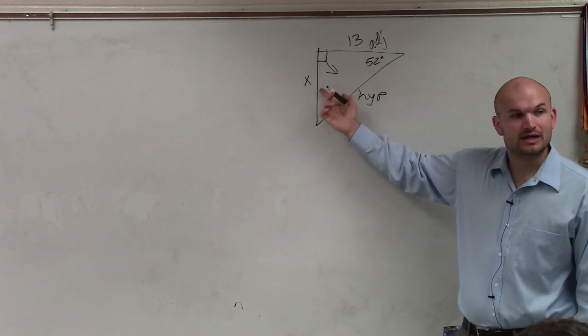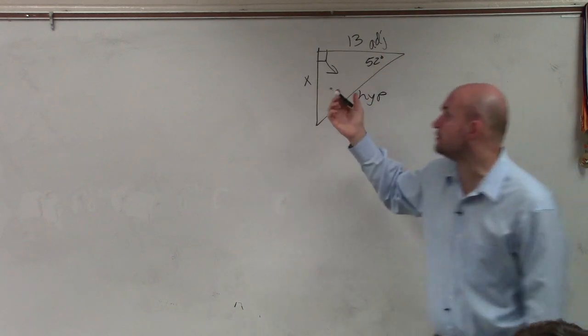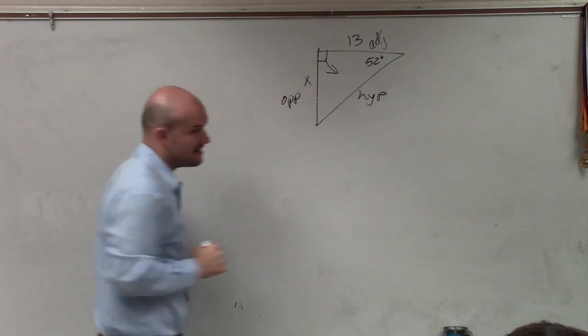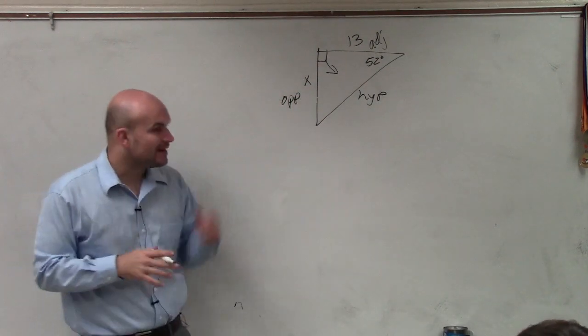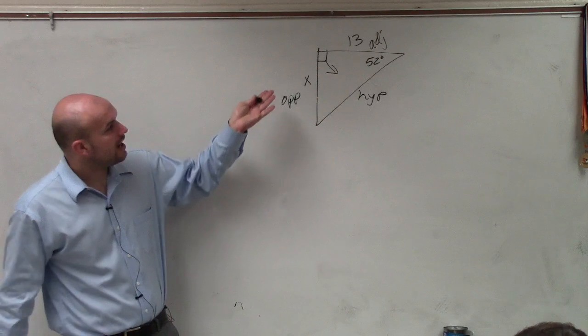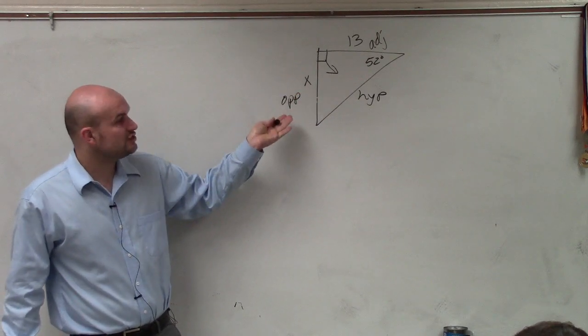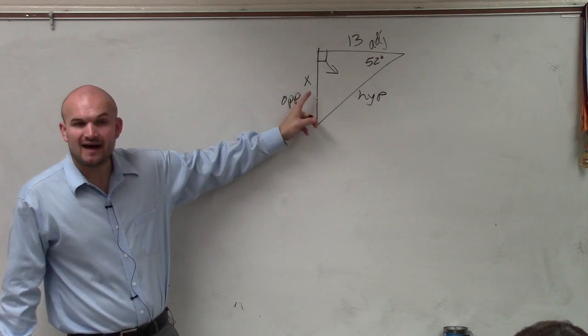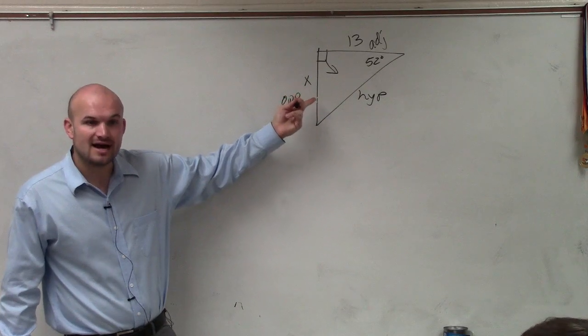Then the other side, which is directly opposite of your angle, is what we call the opposite side. Now, we're given a right triangle with an angle and an opposite and an adjacent side, and we're trying to find the value of that side.